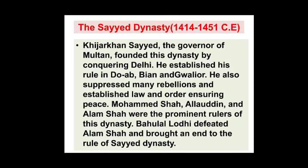The next dynasty is the Sayyid Dynasty, which did not have a particularly important king. Khizr Khan Sayyid, the governor of Multan, founded this dynasty by conquering Delhi, and established his rule over Doab, Bayan, and Gwalior only. Later, Bahlul Lodi defeated Alam Shah and brought the end of the Sayyid Dynasty rule. The Sayyid Dynasty could not establish or occupy other kingdoms, and so it declined — lasting from 1414 to 1451.